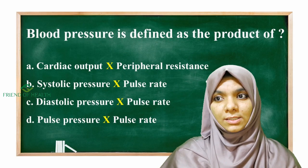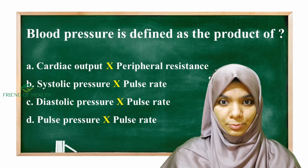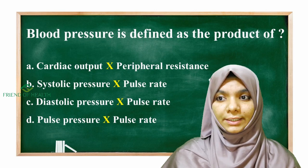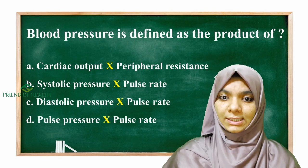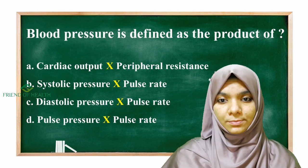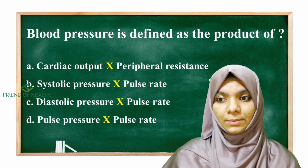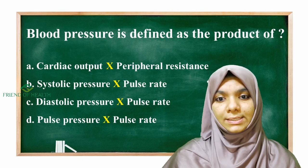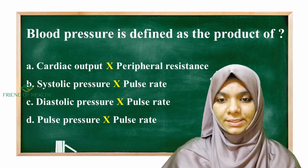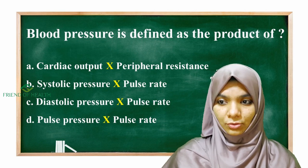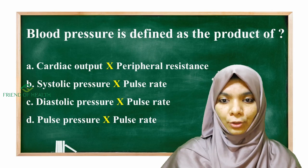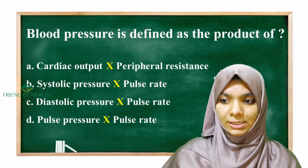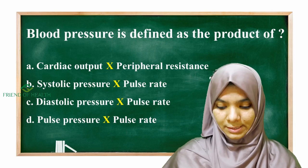Blood pressure is defined as the product of: option A, cardiac output into peripheral resistance; option B, systolic pressure into pulse rate; option C, diastolic pressure into pulse rate; and option D, pulse pressure into pulse rate.